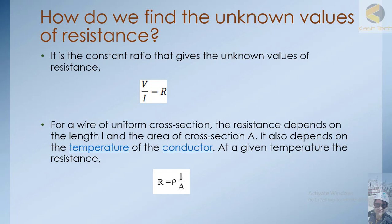It is the constant ratio that gives the unknown values of resistance. We have now seen examples where we calculated the value of resistance — which is constant — at different voltages. For a wire of uniform cross section, the resistance depends on the length L of the wire and the cross-sectional area A. It also depends on temperature of the conductor. At a given temperature, resistance of any conductor can be found using the formula: R equals rho times L divided by A, where rho is the resistivity — a property of the conductor material.